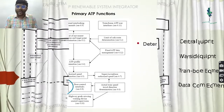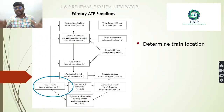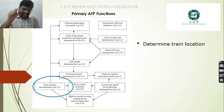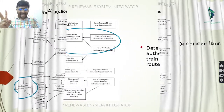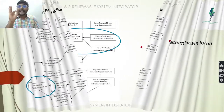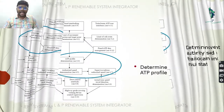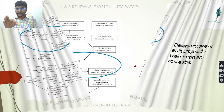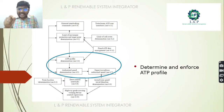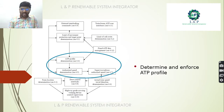The primary functions of ATP — Automatic Train Protection — are: first, to determine the train location; second, to determine the movement authority based on train location and route status; and third, to determine and enforce the ATP speed profile — authorizing speed determination and supervising and enforcing the authorized speed.